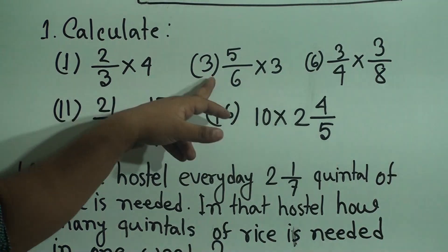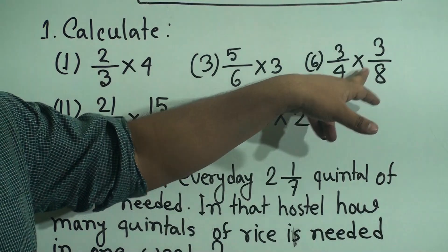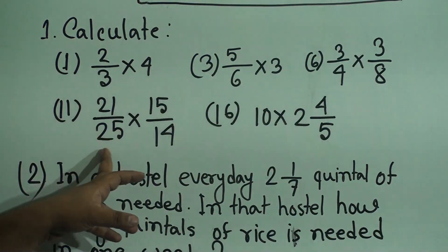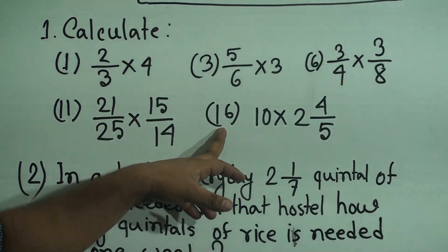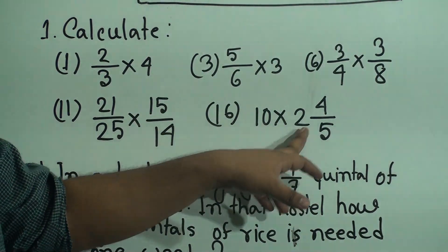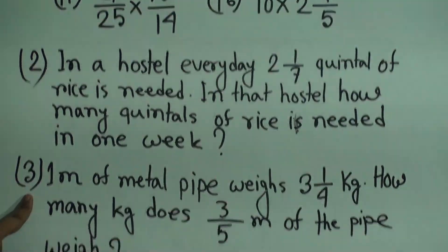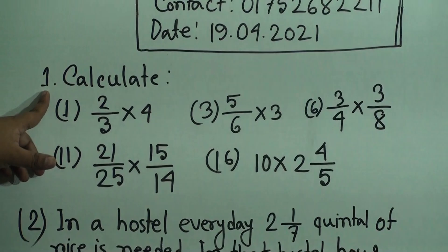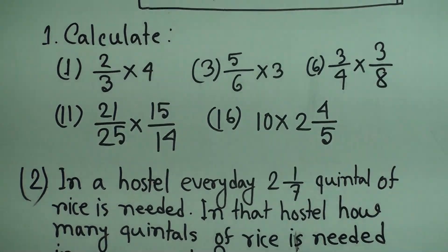Number 1: 2/3 multiply 4. Number 3: 5/6 multiply by 3. Number 6: 3/4 multiply by 3/8. Number 11: 21/25 multiply 15/14. Number 16: 10 multiply 2 and 4/5. These are the problems on the board. At first we solve question number 1, that means multiplication of fractions.